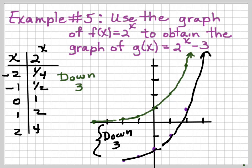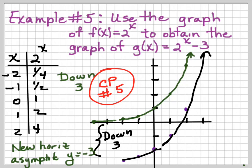And since I've gone down 3, I've also had to change my horizontal asymptote down 3. So it goes from y equals 0 to y equals negative 3. So go ahead and do your checkpoint number five.